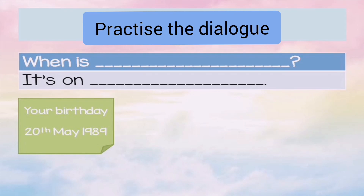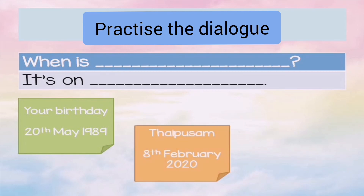When somebody asks 'When's your birthday?' you answer 'It's on 20th May.' You shouldn't say 'It's on 20 May' — that is wrong. You have to say 'It's on 20th May.' Next question: 'When is Thaipusam?' When somebody asks you, you have to answer using the ordinal form.